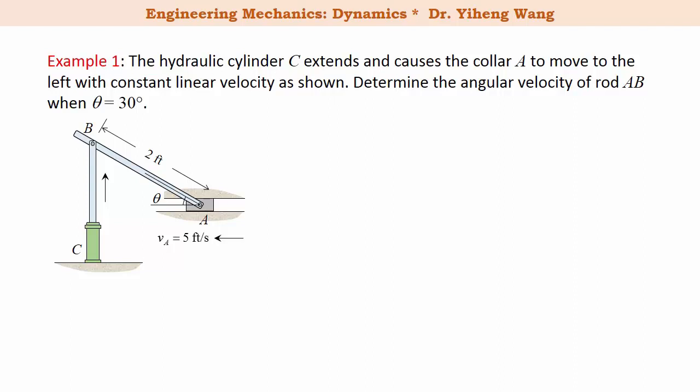We need to determine the angular velocity of rod AB when theta equals 30 degrees. At this point you should already know how to solve this problem using either the relative motion analysis or by applying the instantaneous center of zero velocity.